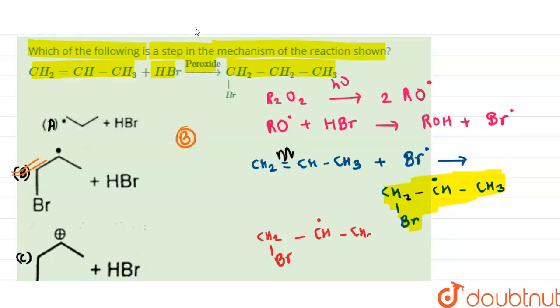...will react with HBr, and hence the formation of CH2Br-CH2-CH3 takes place along with the formation of Br radical.